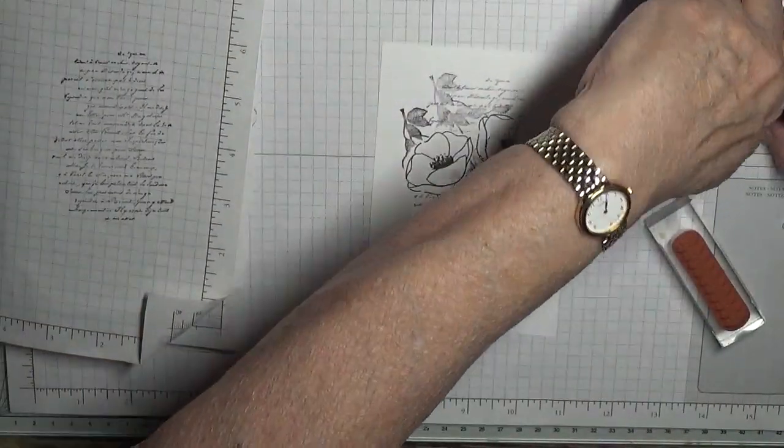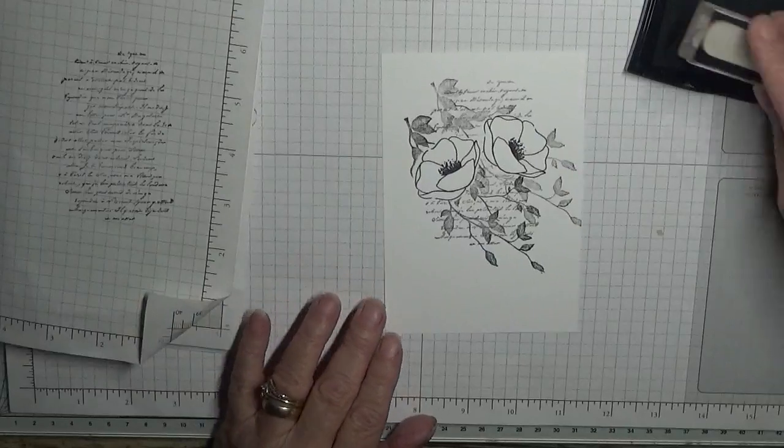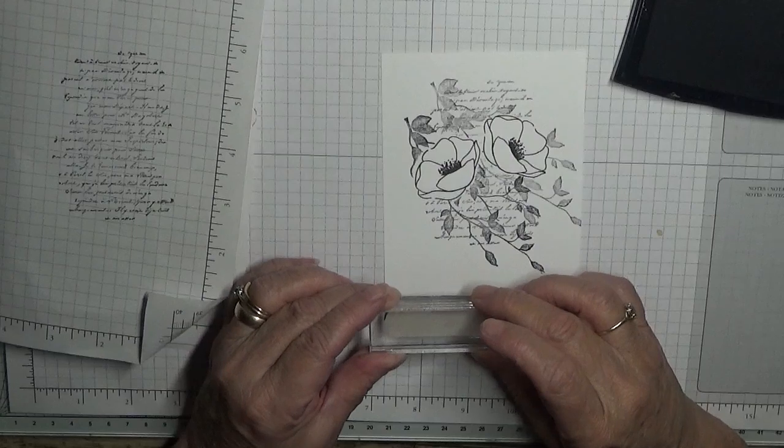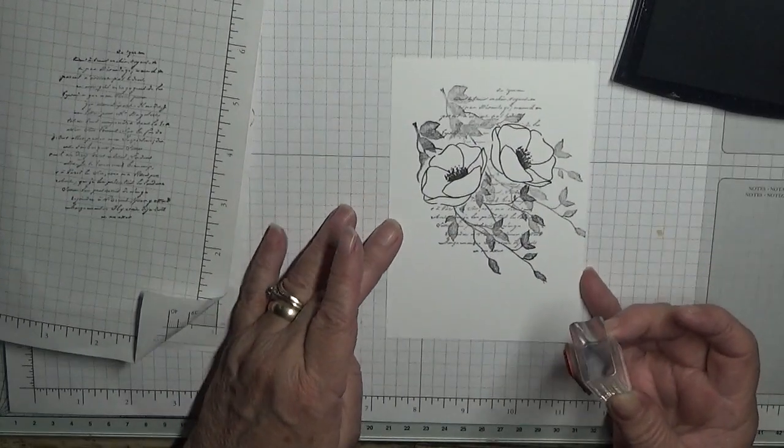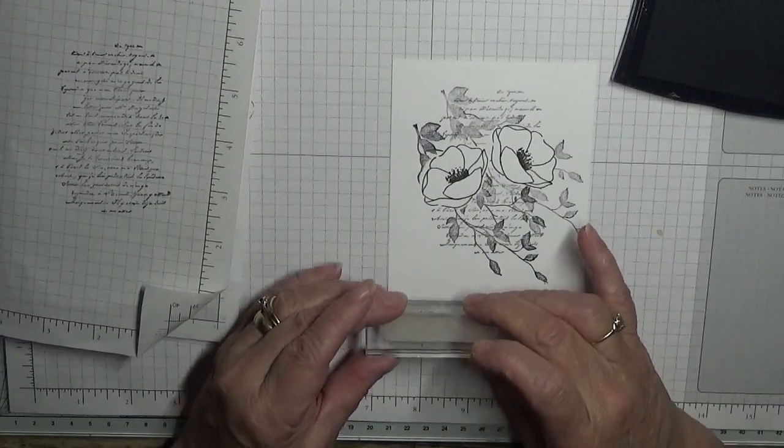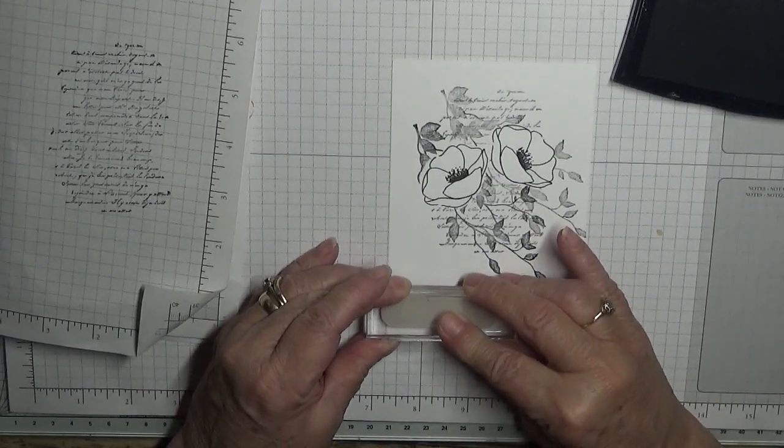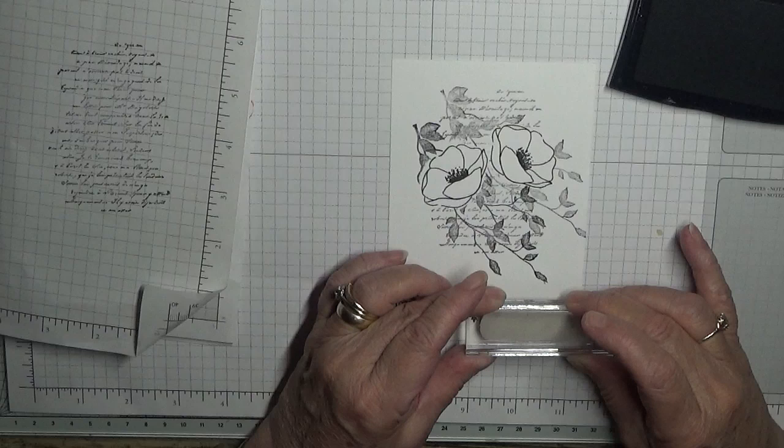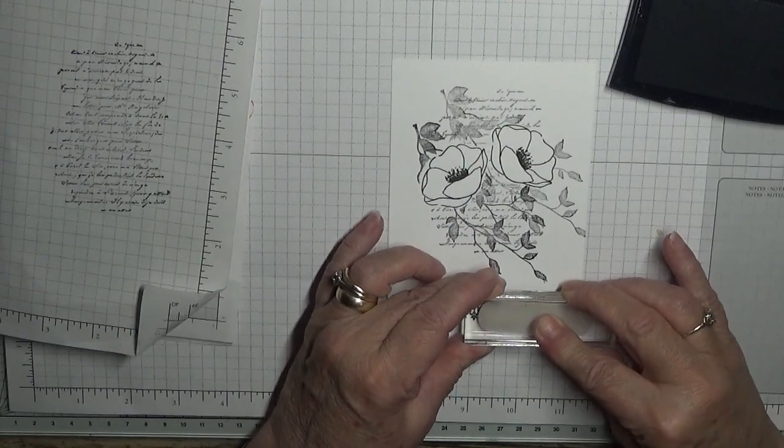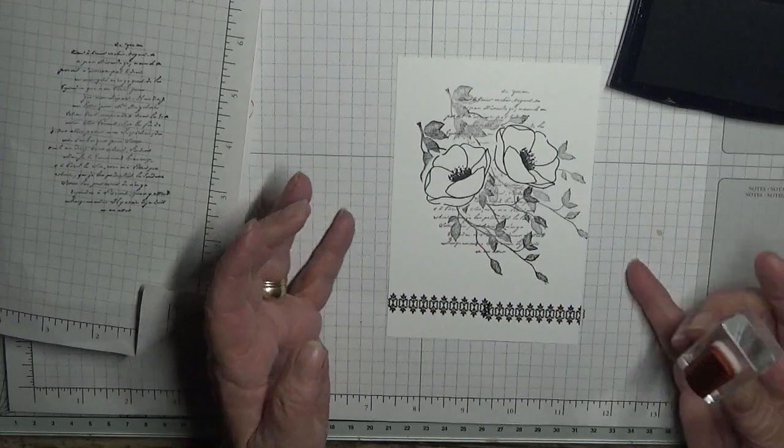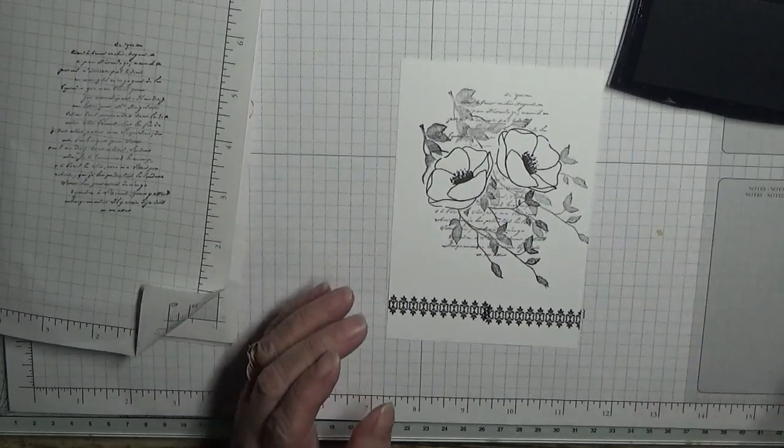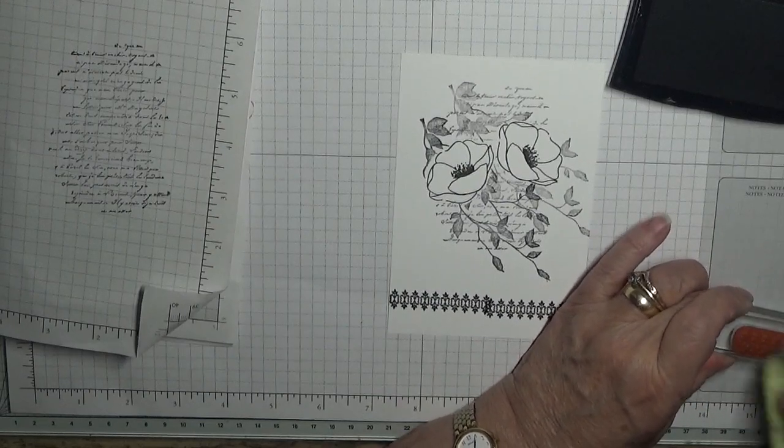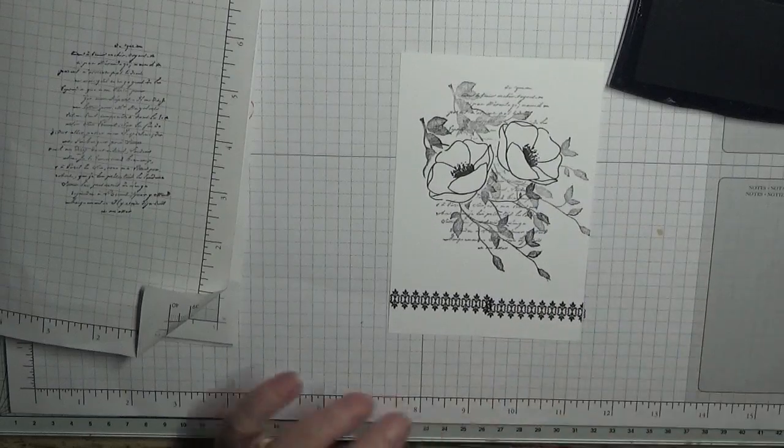Bring back the versafine. And we're going to put the border across the bottom. Let's get this straight. Now you should be able to line it up quite easily, she says. And I bet it's wonky. I told you it was. But that's alright, because we'll cover that up with our sentiment. And it won't be as noticeable.